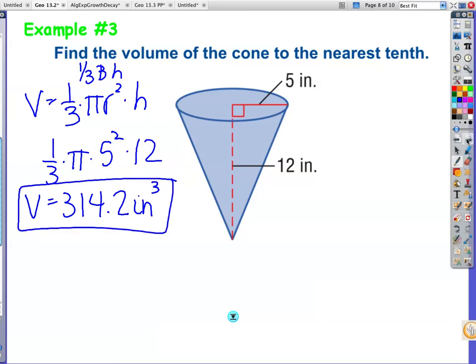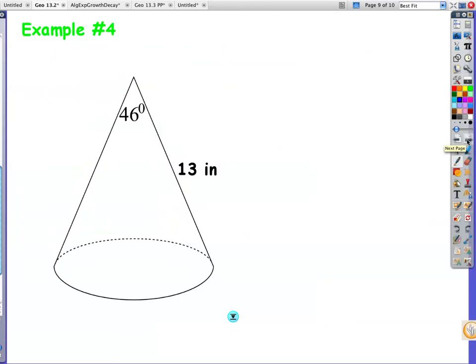Next example is example number 4. We need something to be a little more challenging. We don't have a height, we don't have the radius. We just have that this is 46 degrees and we have a slant height of 13 which we cannot use either. So what do I need? I need one-third, I need a radius, and I need a height.